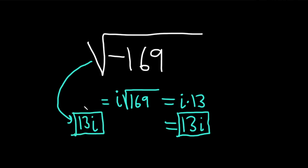So again, you look at this. You say, the negative is going to be an i. And then the square root of 169 is 13. So the answer is 13i.